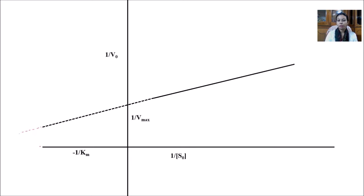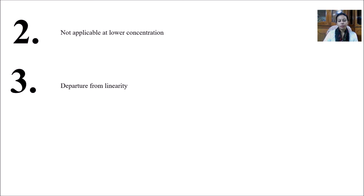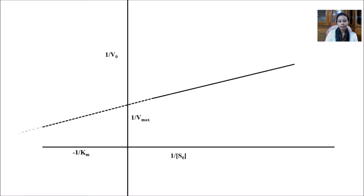The second drawback was that for lower concentrations this graph was not applicable. And third, we used to plot a linear graph, but in the Lineweaver-Burk plot we will see a lot of clumping of data in this region, and later on when it moves forward then it goes clearly.